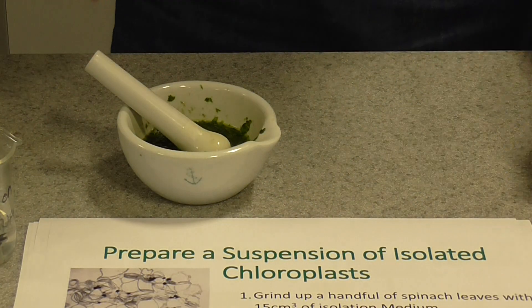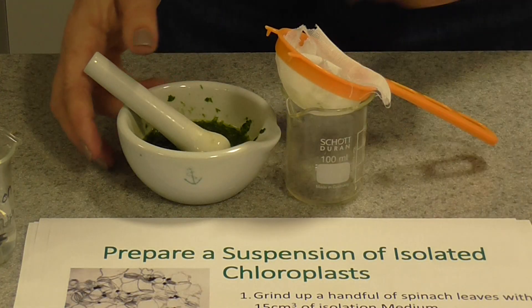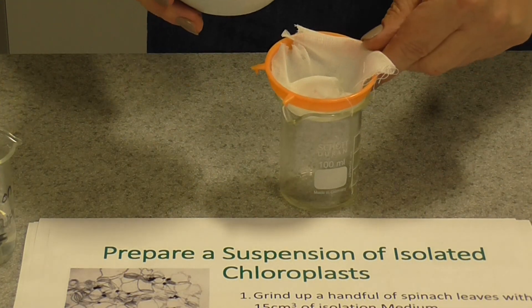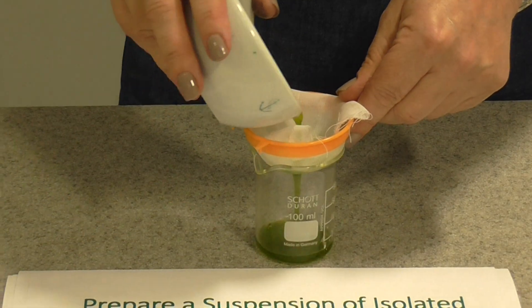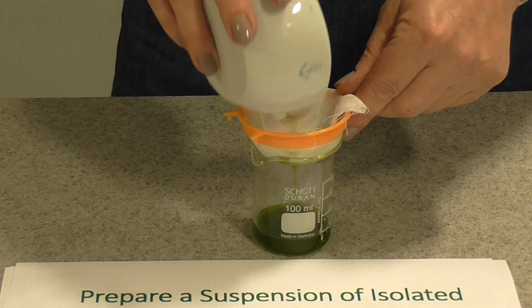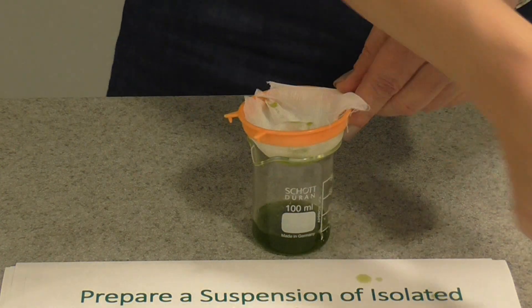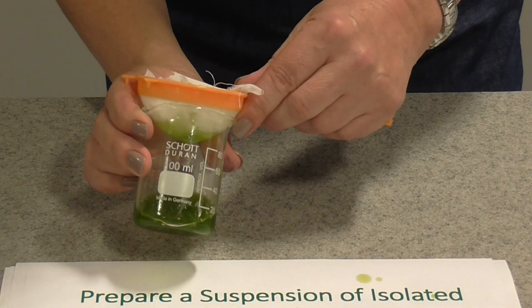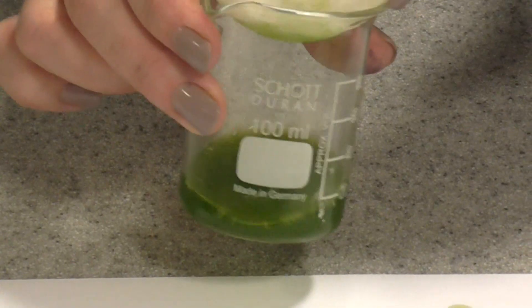As soon as you've ground the leaves up, the next thing you need to do is filter. I'm using a tea strainer with some muslin in it to remove any large fragments of cell debris. Pour the liquid through — you can see it dripping through the bottom — and we should have enough to proceed.